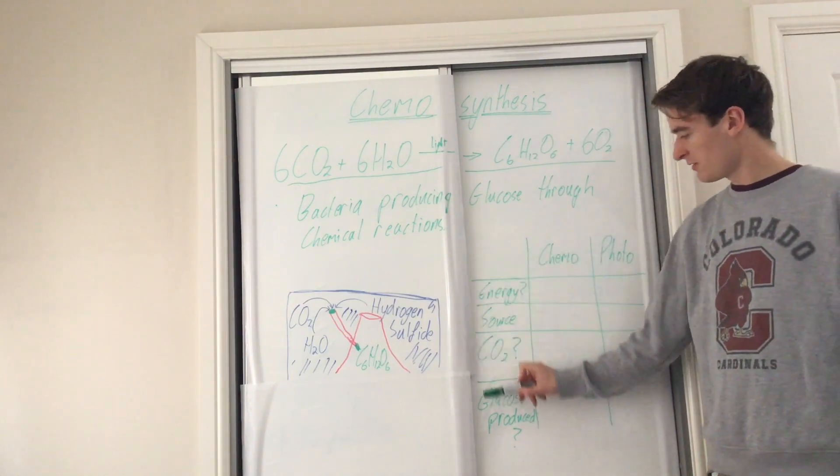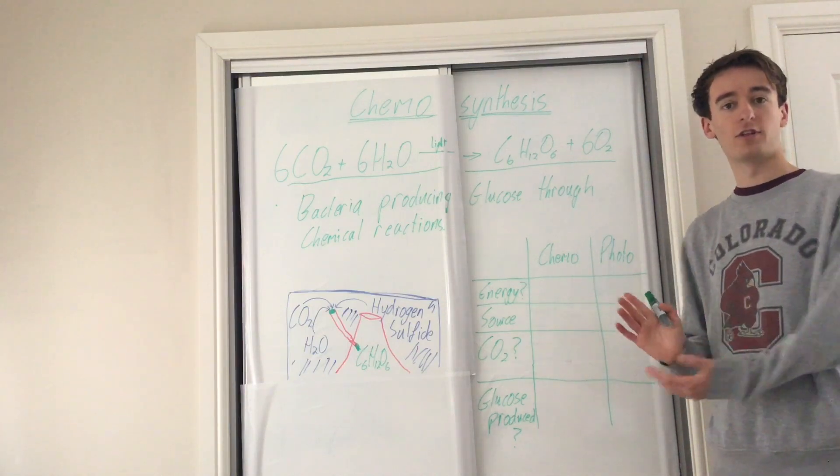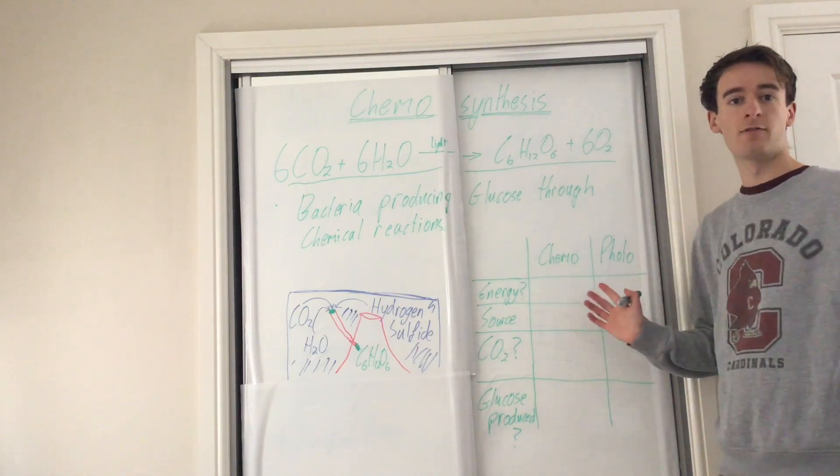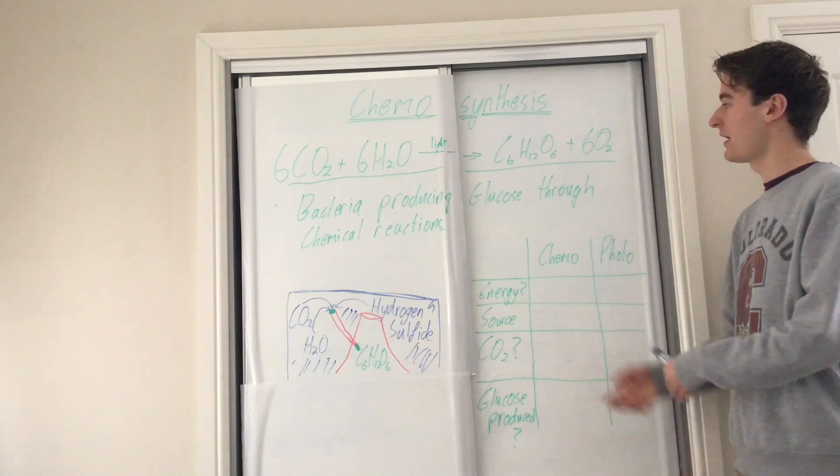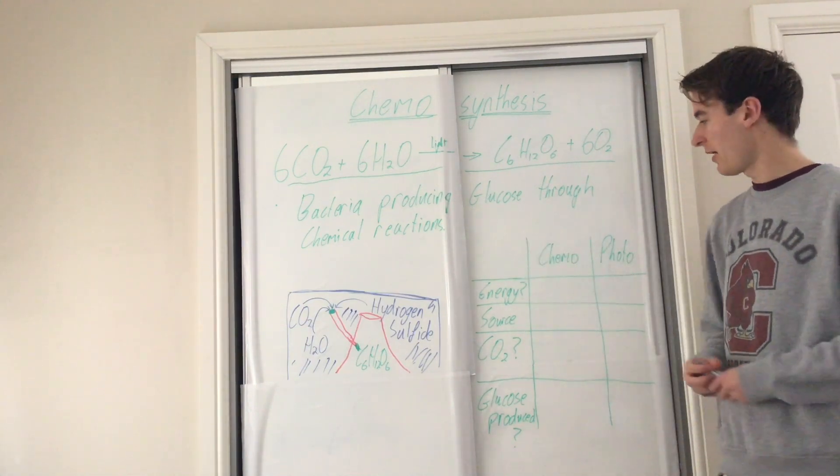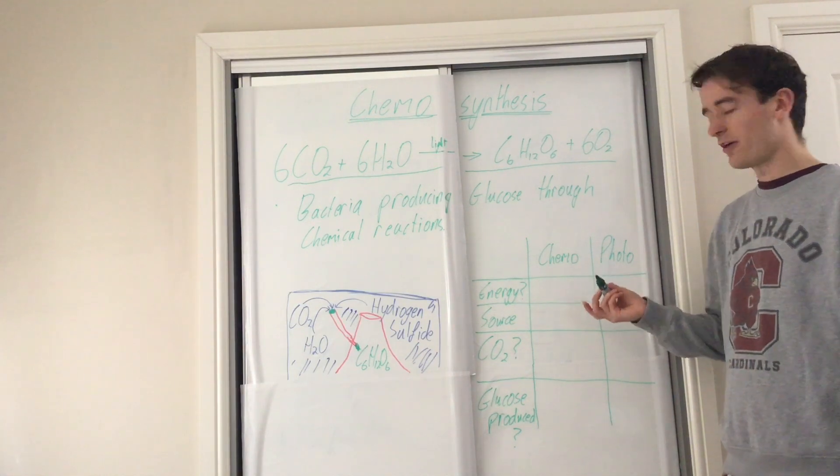So we can use this table just to summarize the differences between chemosynthesis and photosynthesis. Yes, they're both making energy, making glucose. However, there are some differences.